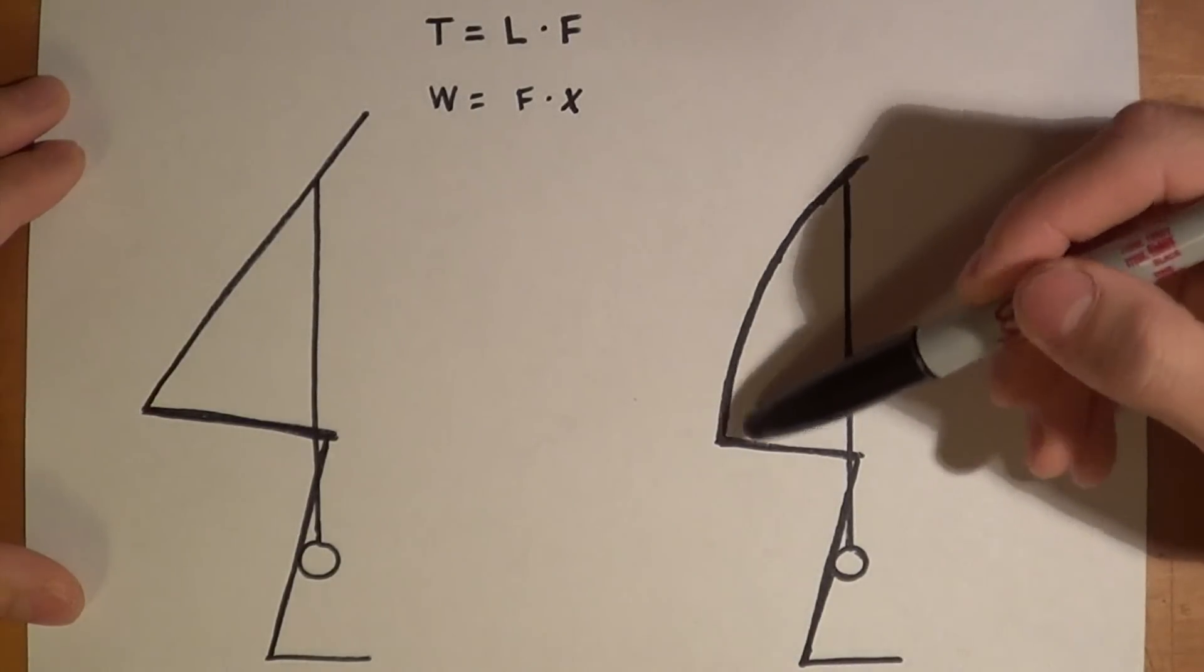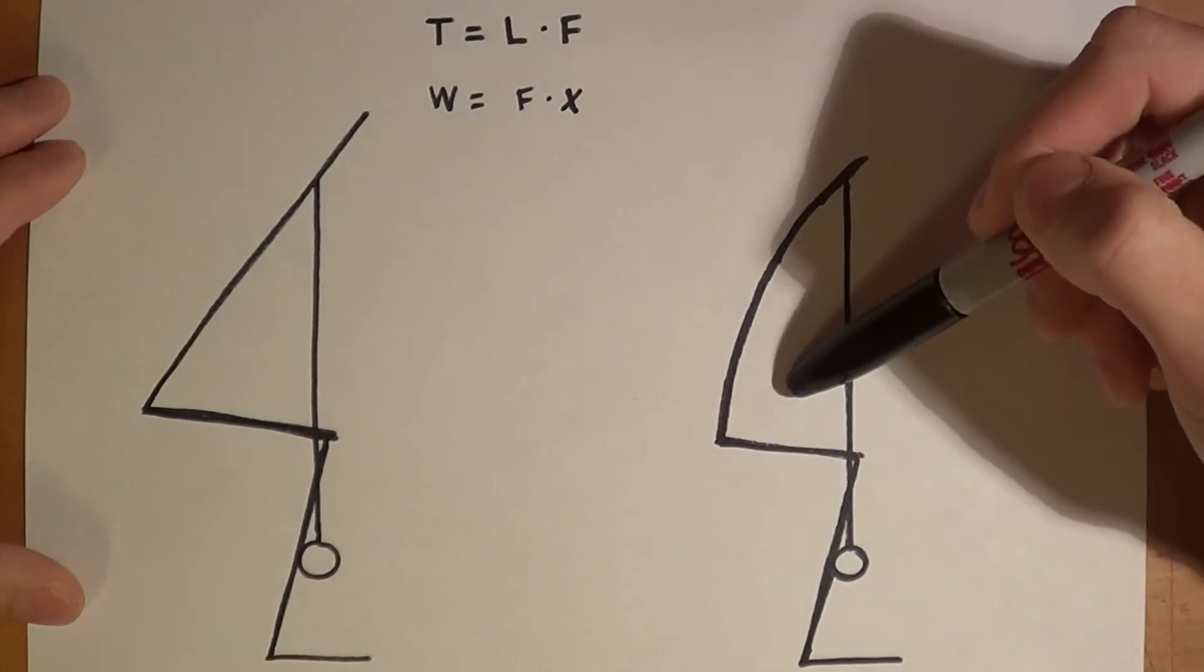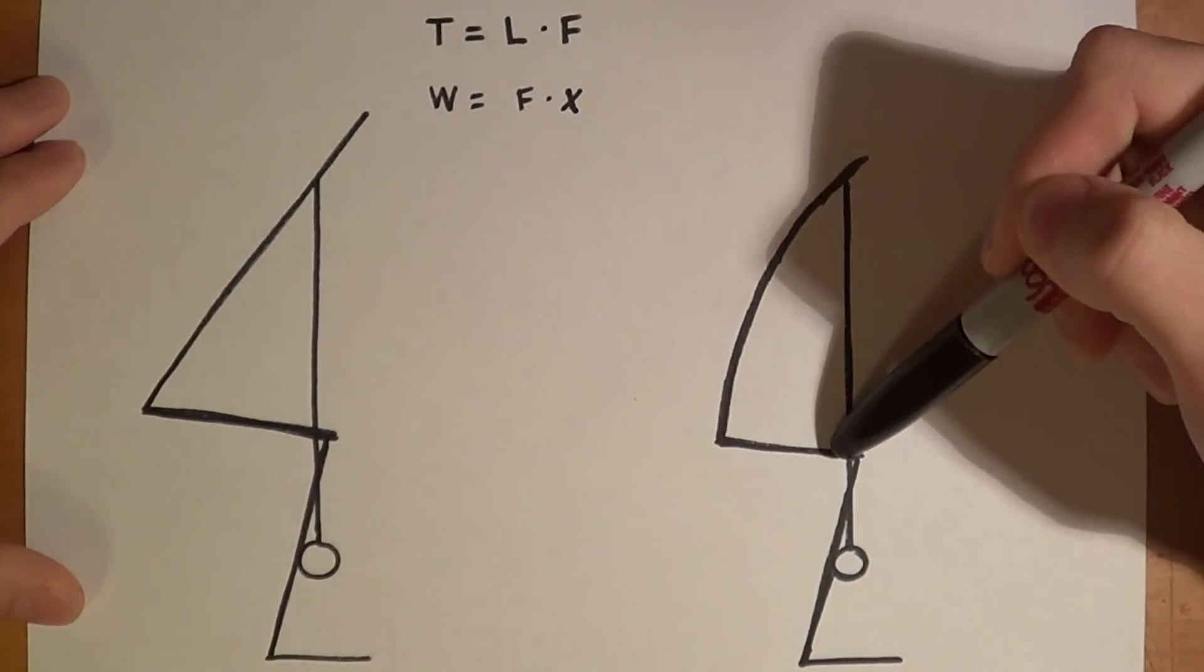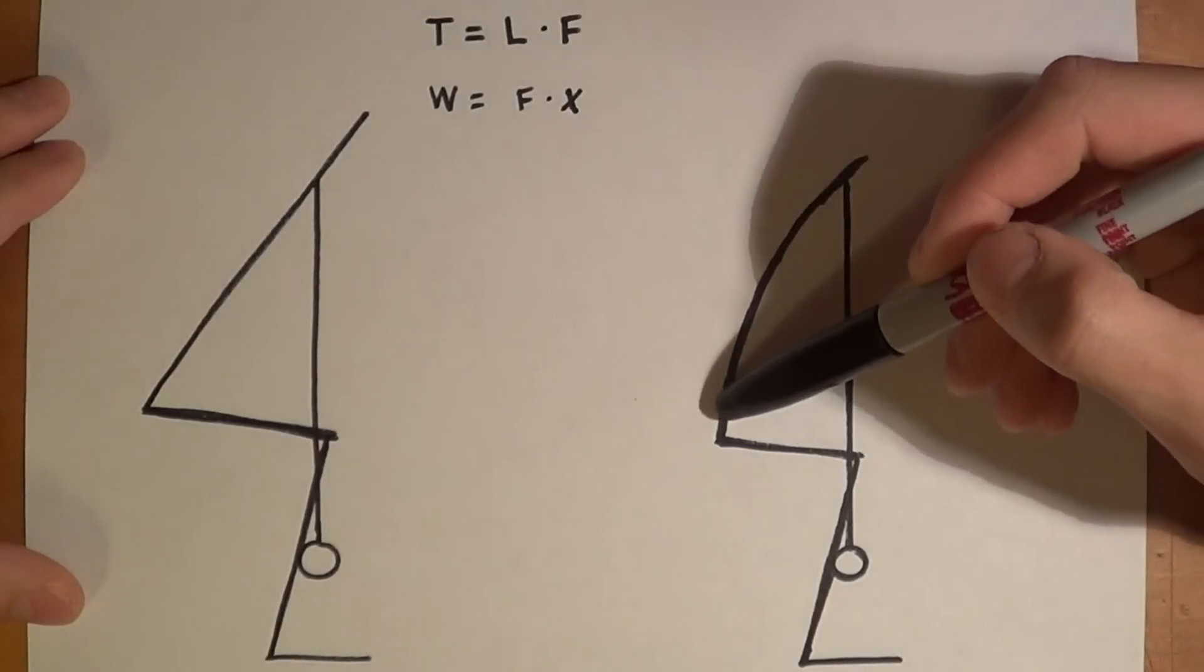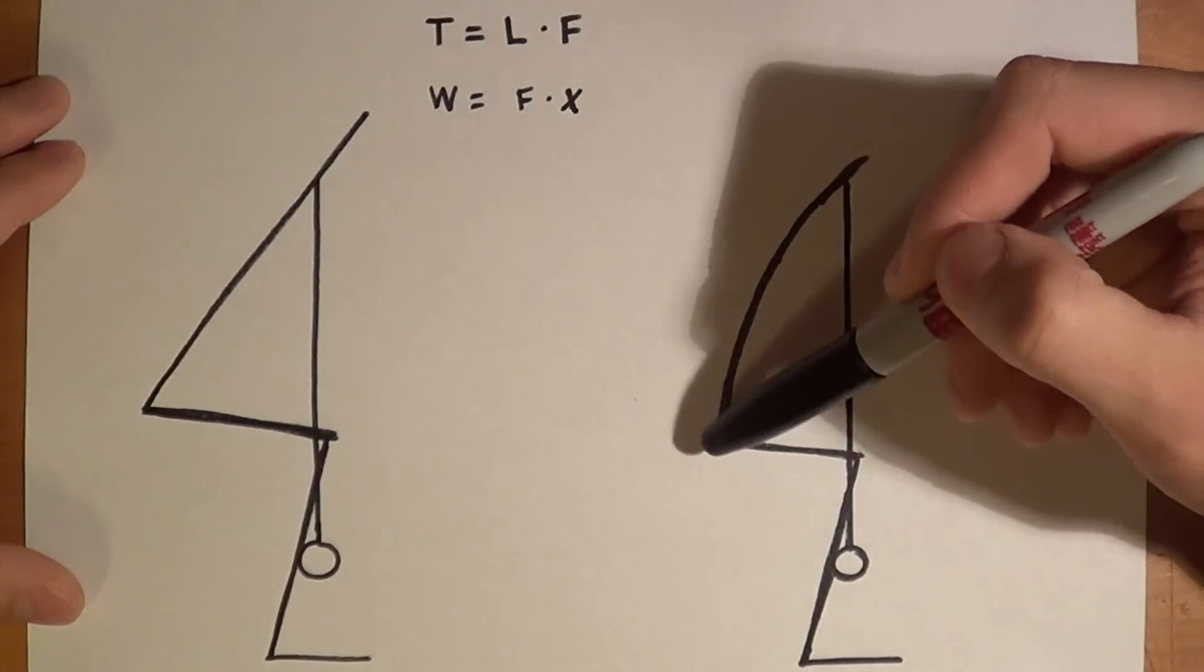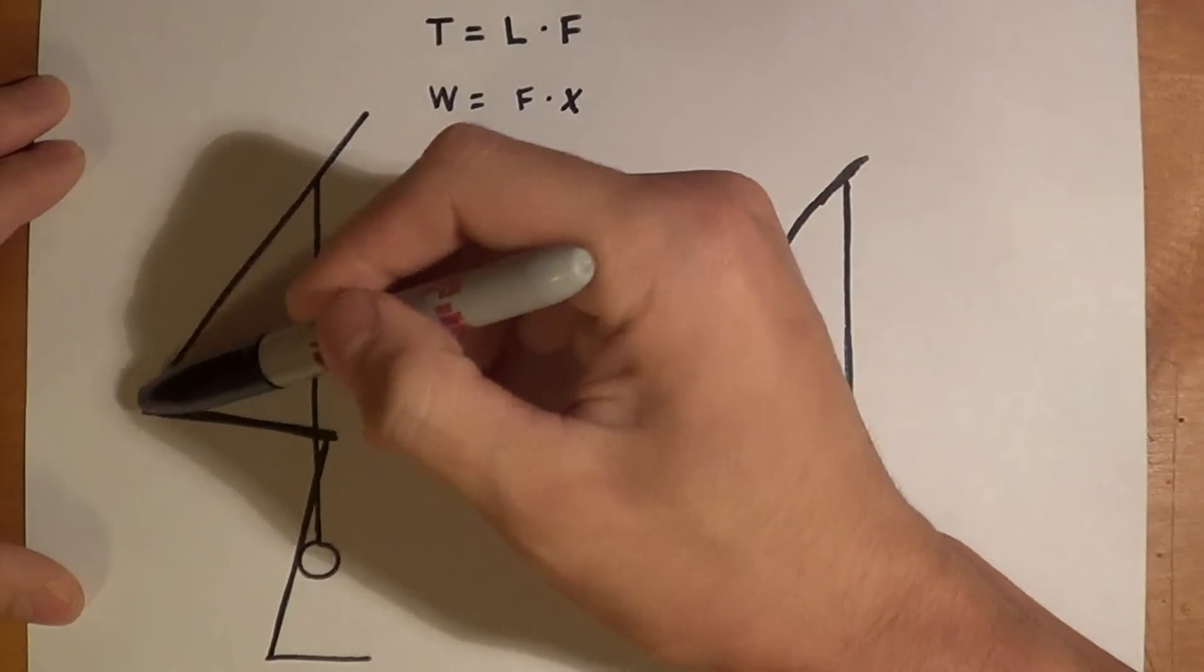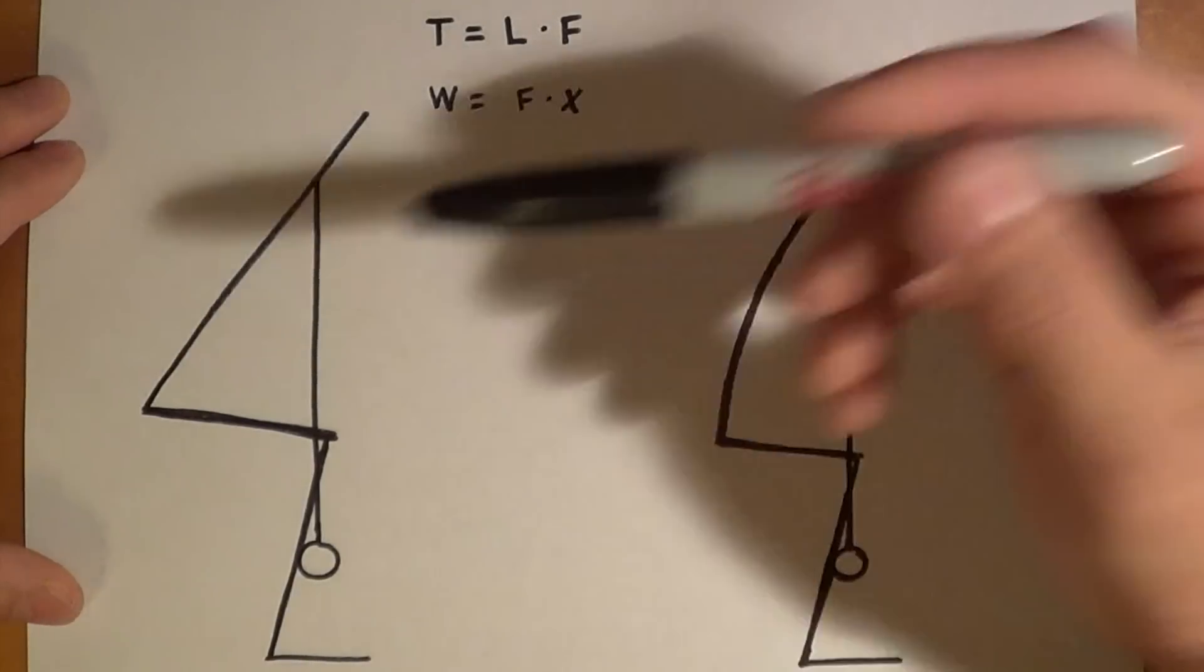So basically the force that your muscles have to produce in this side compared to this one is going to be significantly less just because your hips are closer to the application of force. And when it comes to work, we can see that the hips or the angle between the hip and the spine is more open here. So the difference between there and 180 is going to be significantly less than over here. And that basically just means that you're doing less work on this side than you are on this side.